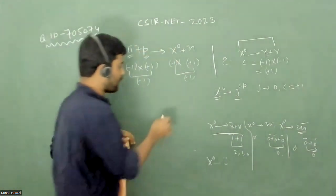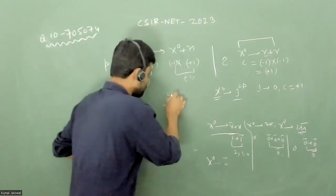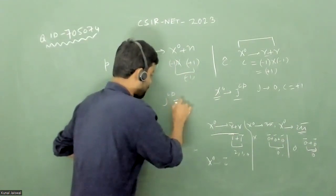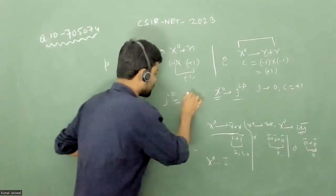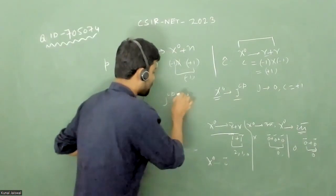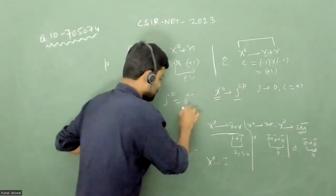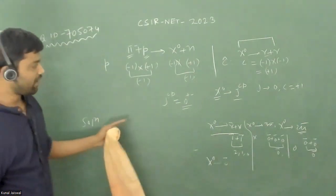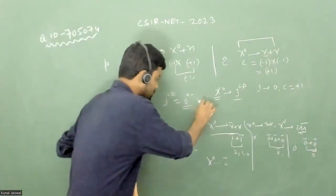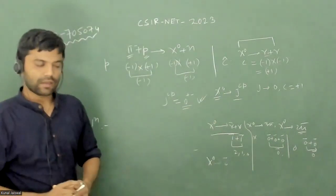So we have obtained all three quantum numbers of the x0 particle: spin J = 0, charge conjugation C = +1, and parity P = −1. This is a really interesting question. Thank you.